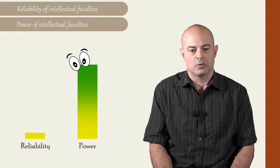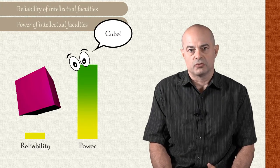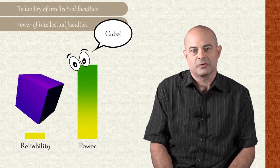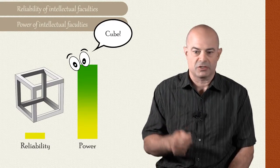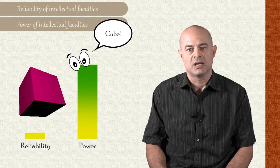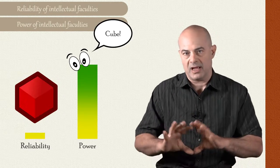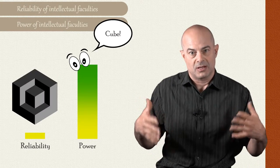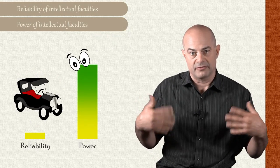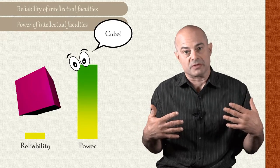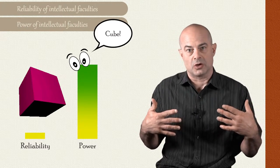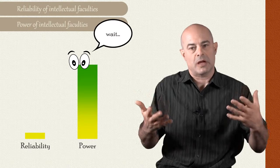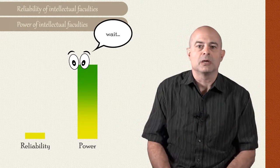So for example, if you were just extremely trusting of your perceptual faculties and you're ready just to believe perceptual appearances as soon as you get them without ever checking, well, you'd get a lot more true beliefs because the perceptual faculties are going to be delivering you a lot of truth, but you're going to make more mistakes as well. And so you're going to have an increase in power, but a decrease in reliability.